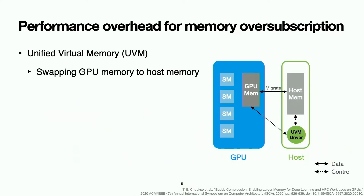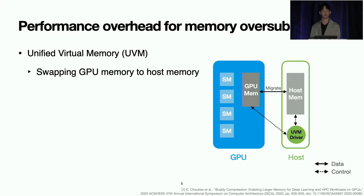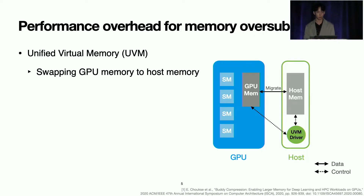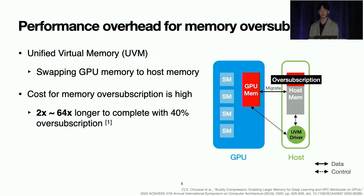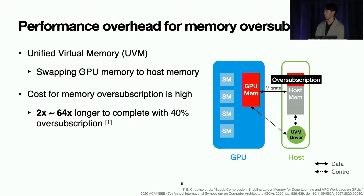The unified virtual memory UVM introduced by NVIDIA and AMD enables large memory applications to over-subscribe the limited GPU memory at the driver level. It transparently manages a unified address space across the GPU and host memory. When GPU memory is full, the UVM driver swaps out GPU memory to host memory, providing transparent over-subscription. However, the cost for memory over-subscription is high — with 40% over-subscription, a single workload can take 2 to 64 times longer to complete than without over-subscription.